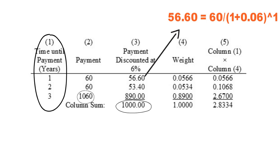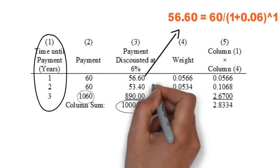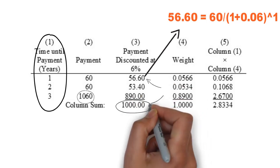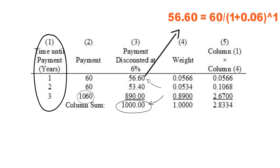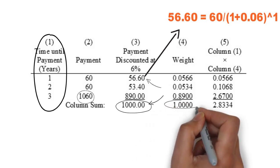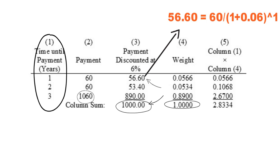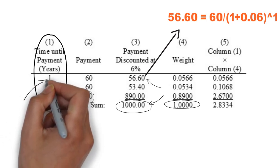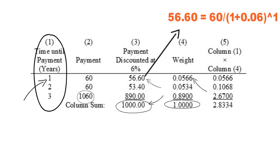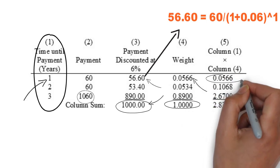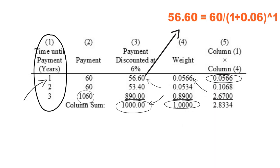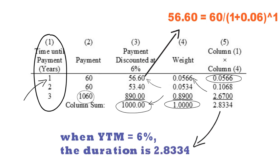This number may not be 1000 all the time. In column 4, each number in column 3 is divided by the sum to calculate the weight. For example, divide 56.60 by 1000 — you get 0.0566. Please make sure that the sum in column 4 is 1. In column 5, we multiply weight by time. For example, 1 times 0.0566 equals 0.0566. Finally, the sum of column 5 is 2.8334. Hence, when YTM equals 6%, the duration is 2.8334.